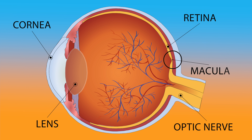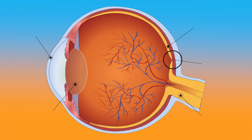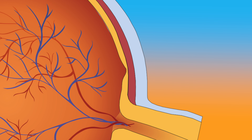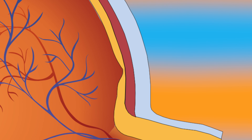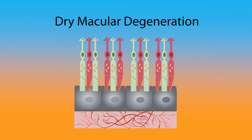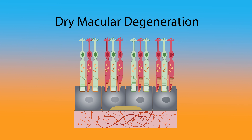The macula is the central area of the retina and is responsible for our central vision. Let's get a close-up of the macula so we can understand how macular degeneration is caused. These are retinal cells, and they sit on top of a layer of blood vessels called the choroid. In one form of macular degeneration, called dry macular degeneration, yellow deposits of cellular debris accumulate under the macula.